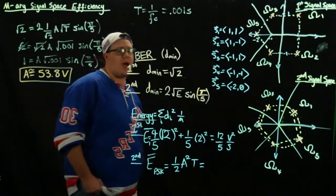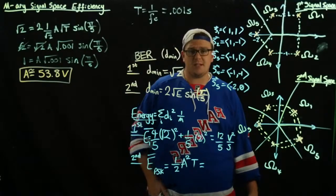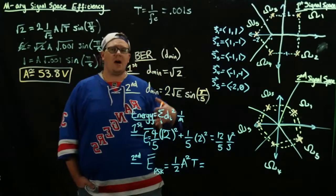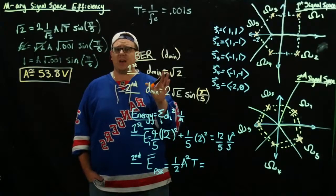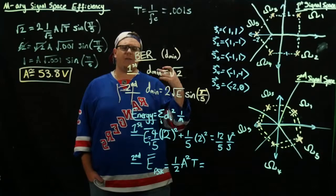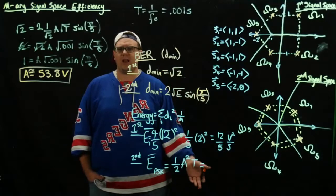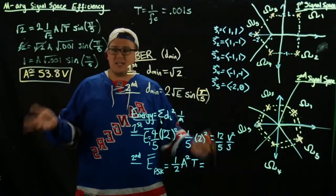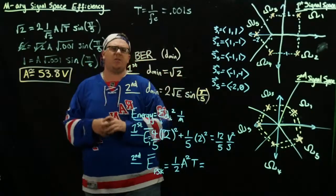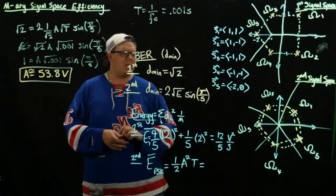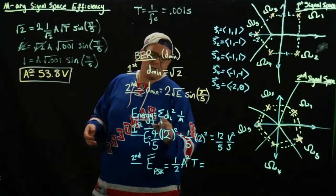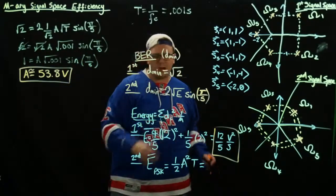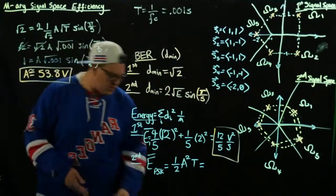This is the value of A that matches the bit error rate performance of both systems — they both perform at the same efficiency in terms of making errors. If the first system makes an error once in every thousand symbols, the second one will also make an error once in every thousand symbols on average. Now we compare energies: the one using least energy is the one we want to use.